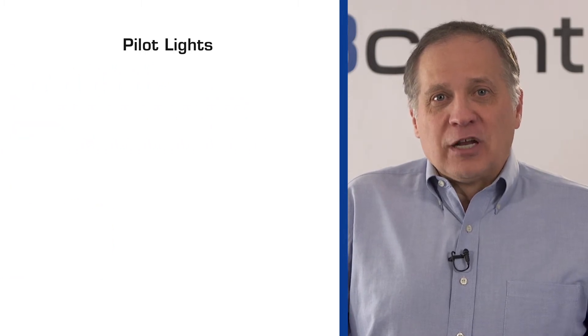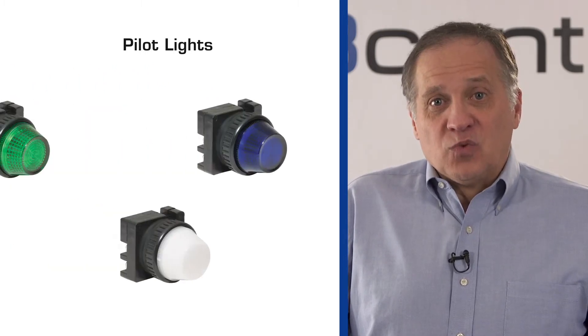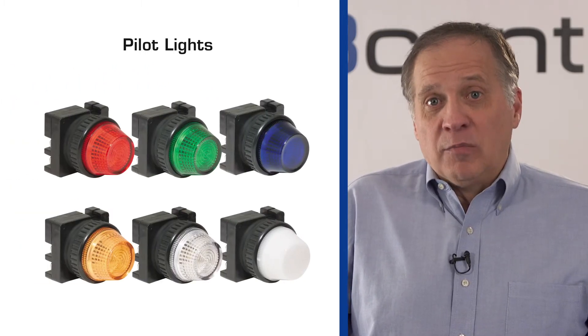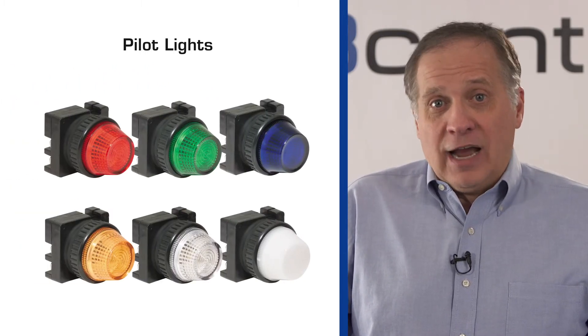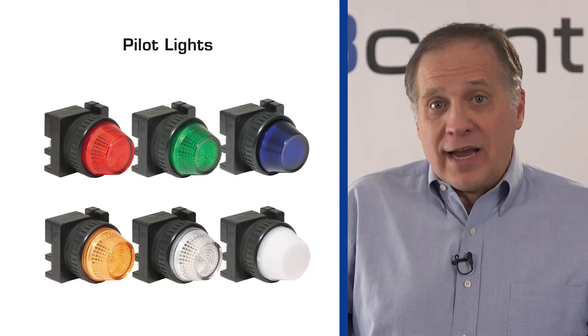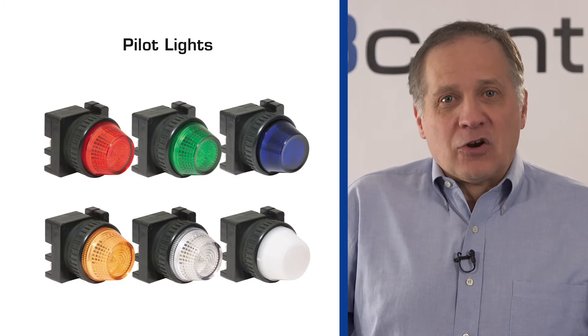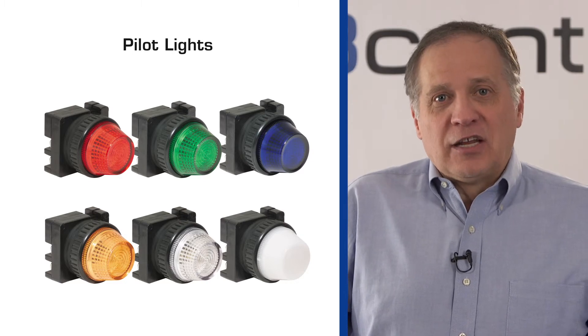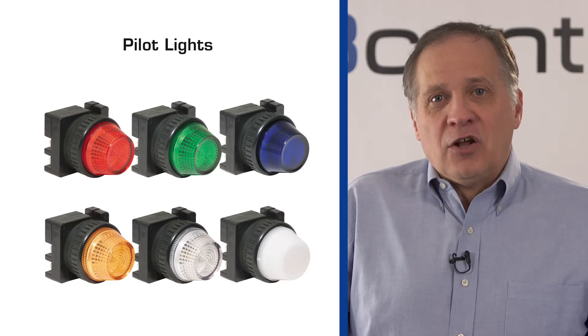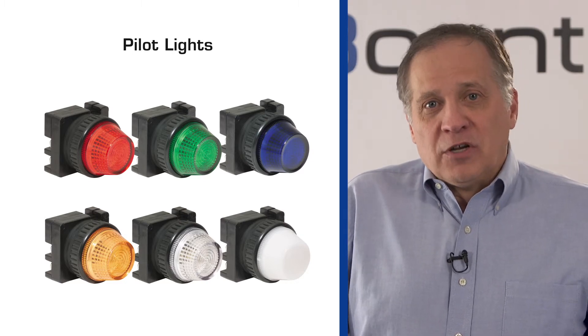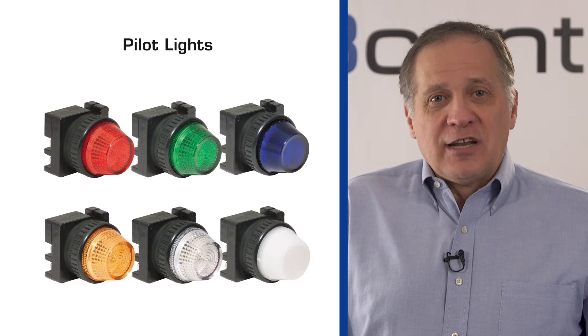Pilot lights include a colored lens such as red, green, blue, yellow, amber, clear, or white. These colored lenses communicate the condition of the machine or equipment to which the lights are connected.